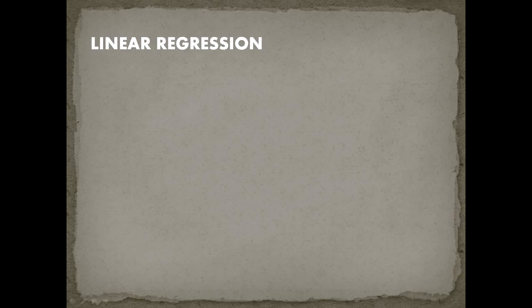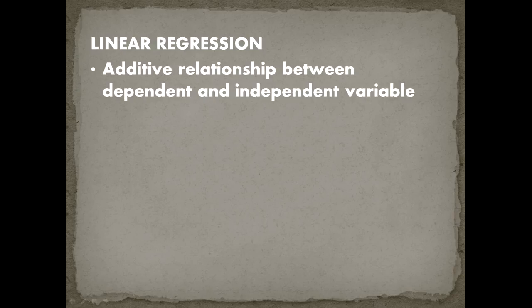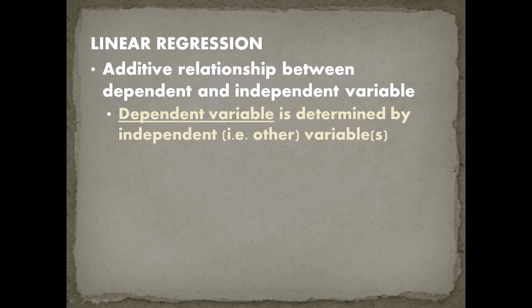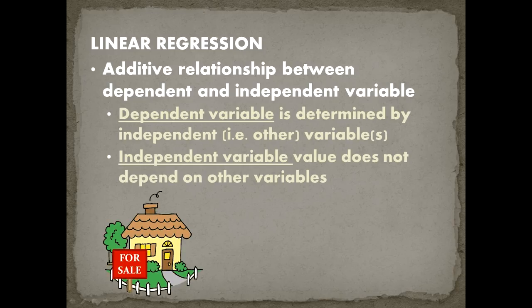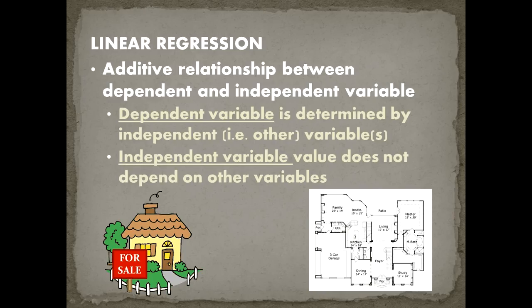So what is linear regression? It's when we make a forecast and say there's an additive relationship between the dependent and independent variable. The dependent variable is determined by the independent variables in the model, whereas an independent variable's value does not depend on other variables. For example, if I have a home I want to sell, the sale price would be my dependent variable, and the home's square footage would be my independent variable — it's that directional relationship.